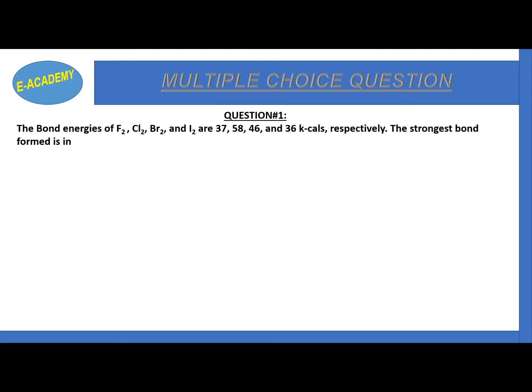bromine, and iodine are 37, 58, 46, and 36 kcal respectively. The strongest bond formed is in F2,